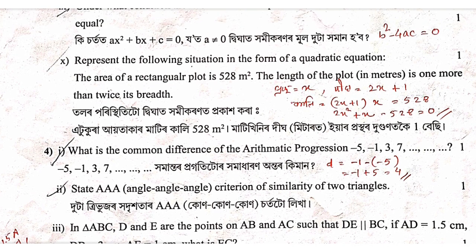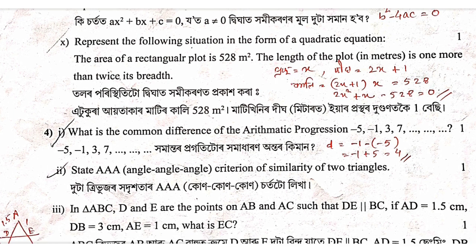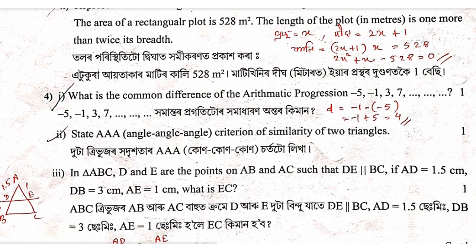We can write 2x plus x plus 1, that is 2x plus 1. When 2x plus x minus 520 we can write zero, and we can write minus 1, 3, 7 into 2x plus 2 minus 1.